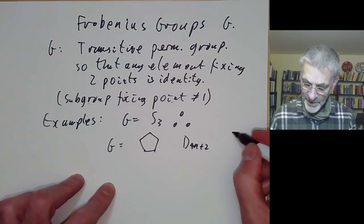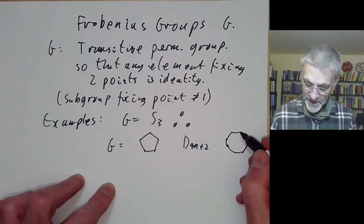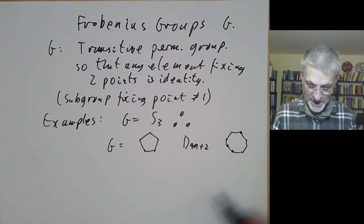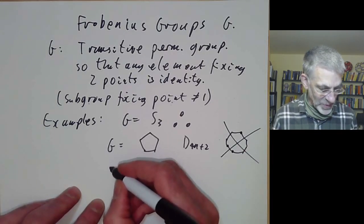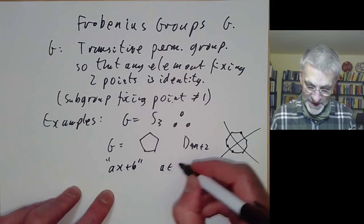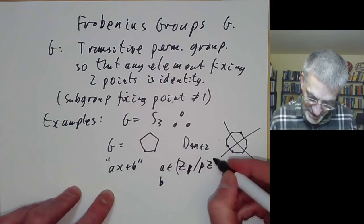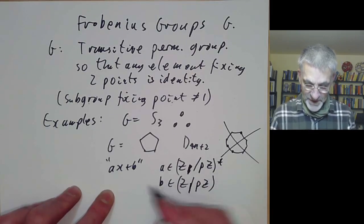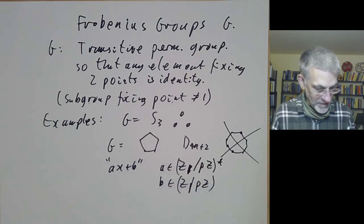If you look at the dihedral group on 4N points, such as the symmetries of an octagon, this isn't a Frobenius group because if you take two opposite points there's a non-trivial automorphism fixing those. Another example is the so-called Ax+B group, where A is a non-zero element and B is an element of a finite field Z mod pZ. The group of all automorphisms of the affine line taking x to Ax+B is a Frobenius group.